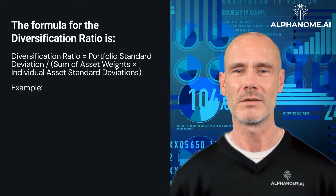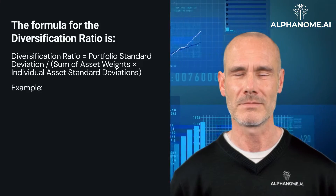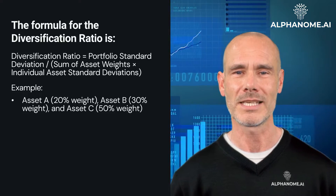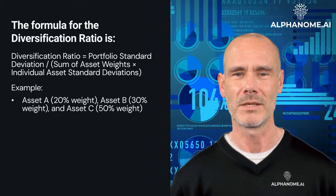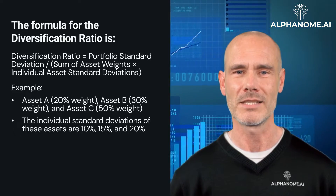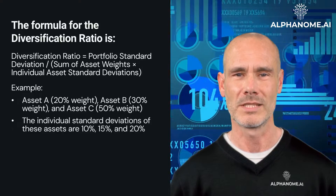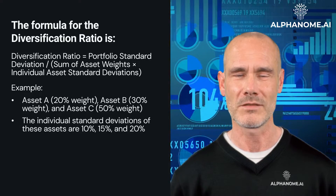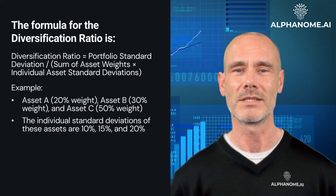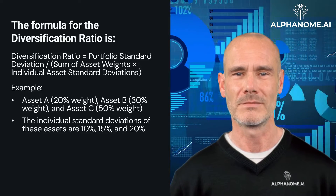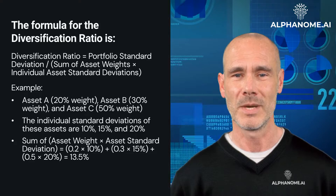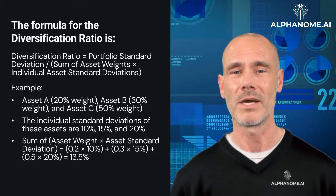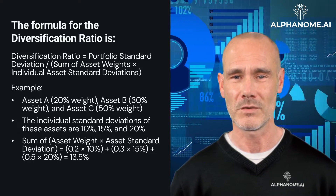Example: Let's consider a portfolio consisting of three assets — Asset A with 20% weight, Asset B with 30% weight, and Asset C with 50% weight. The individual standard deviations of these assets are 10%, 15%, and 20%, respectively. To calculate the diversification ratio, we first find the sum of the asset weights multiplied by their respective standard deviations, which equals 13.5%. Now, let's assume that the actual standard deviation of the portfolio is 12%.